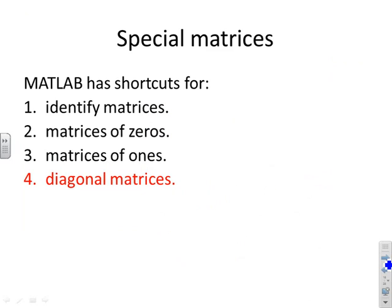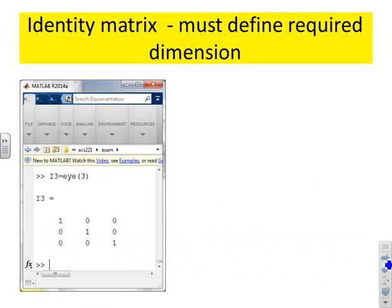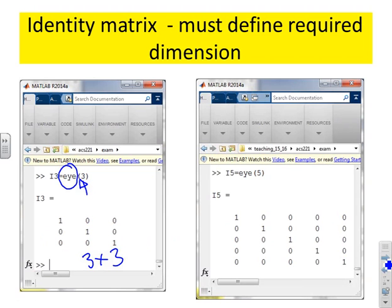Special matrices. MATLAB has got shortcuts for identity matrices, matrices of zeros, matrices of ones, and diagonal matrices. So let's look at those. Here's a shortcut for an identity matrix. And you'll see the MATLAB command is just to write I as in EYE. And the number in here is what's the dimension of the identity matrix you want. Here you'll see I've said I(3) and I've got a 3 by 3 identity matrix. Here I've written I(5) and I get a 5 by 5 identity matrix.